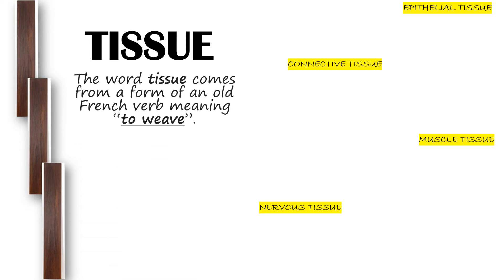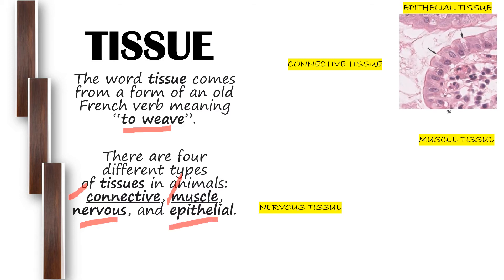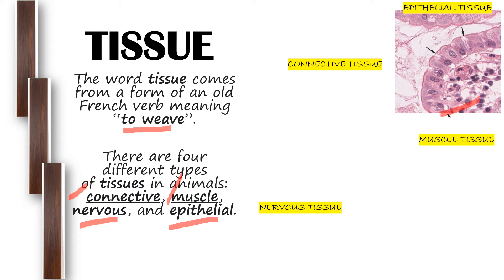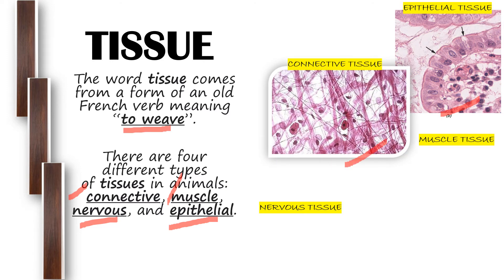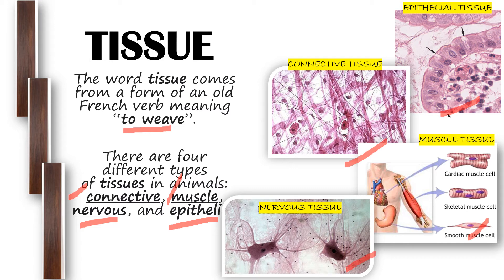The word 'tissue' comes from an old French verb meaning 'to weave.' There are four different types of tissues in animals: connective tissue, muscle tissue, nervous tissue, and epithelial tissue. Take note — they have different forms of tissues but they function as one.